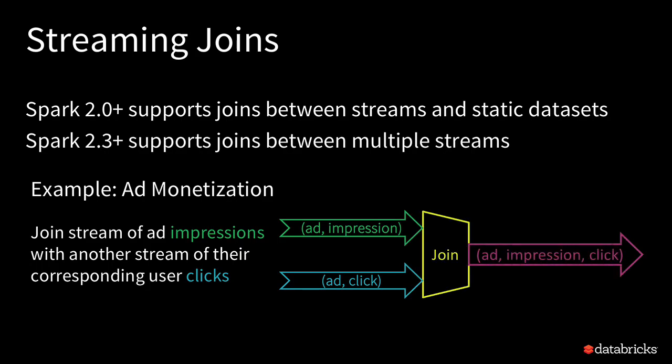To understand Stream Stream Joins, I'm going to use a canonical example of ad monetization. You have two streams of data: one is the stream of ad impressions — when and where the ad was shown — and another stream, probably from a different data source, of ad clicks, when an ad was clicked. To monetize ads, you need to join these two streams to see which impression led to a click.